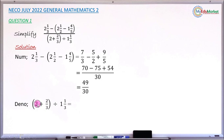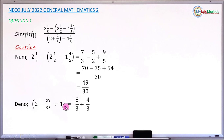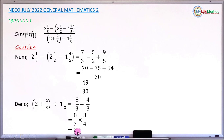Simplify the denominator: you have 2 plus 2 over 3 in a bracket, and that bracket divided by 1 whole number 1 over 3. First, perform the addition in the bracket: 2 plus 2 over 3 gives 2 whole number 2 over 3, which as an improper fraction is 8 over 3. Similarly, 1 whole number 1 over 3 as an improper fraction is 4 over 3. So 8 over 3 divided by 4 over 3 — change division to multiplication by the reciprocal, giving 8 over 3 times 3 over 4. The 3s cancel, leaving 8 divided by 4, which equals 2.